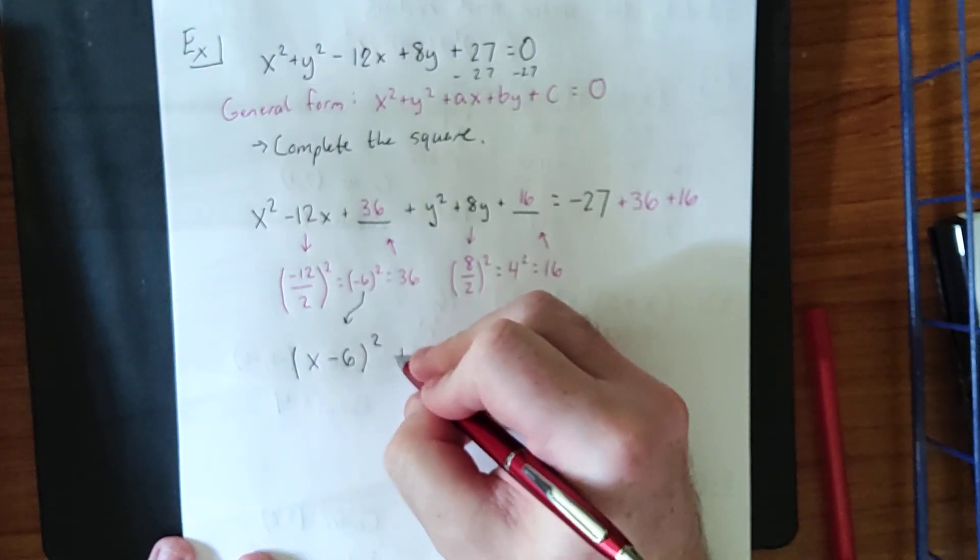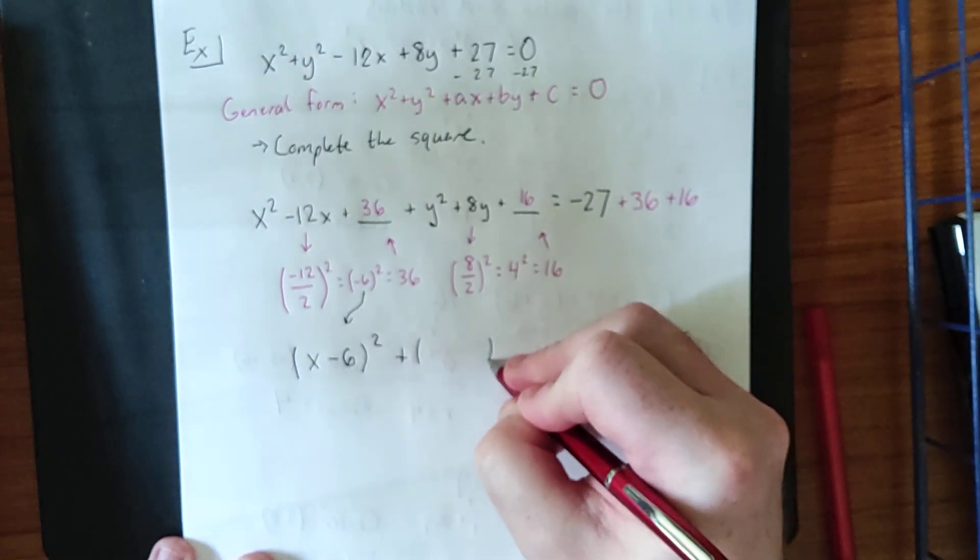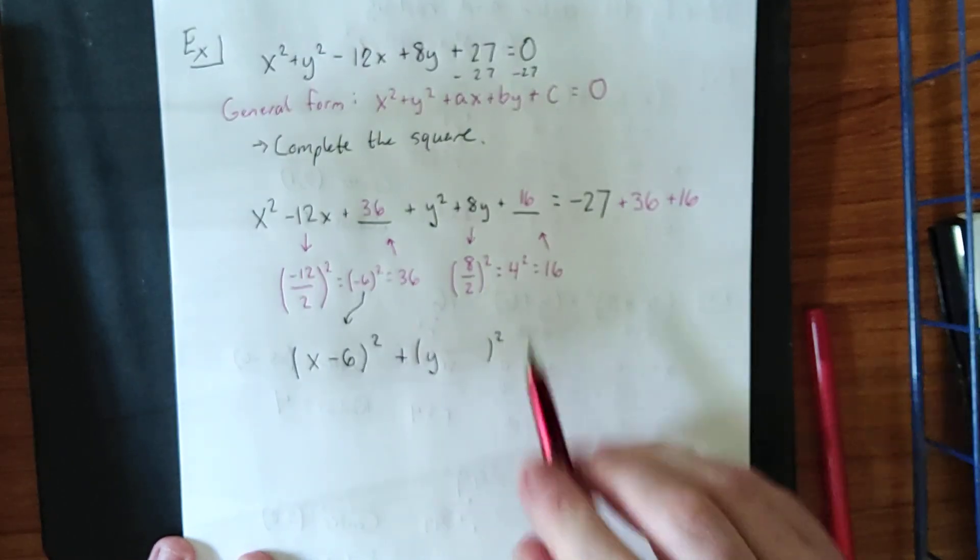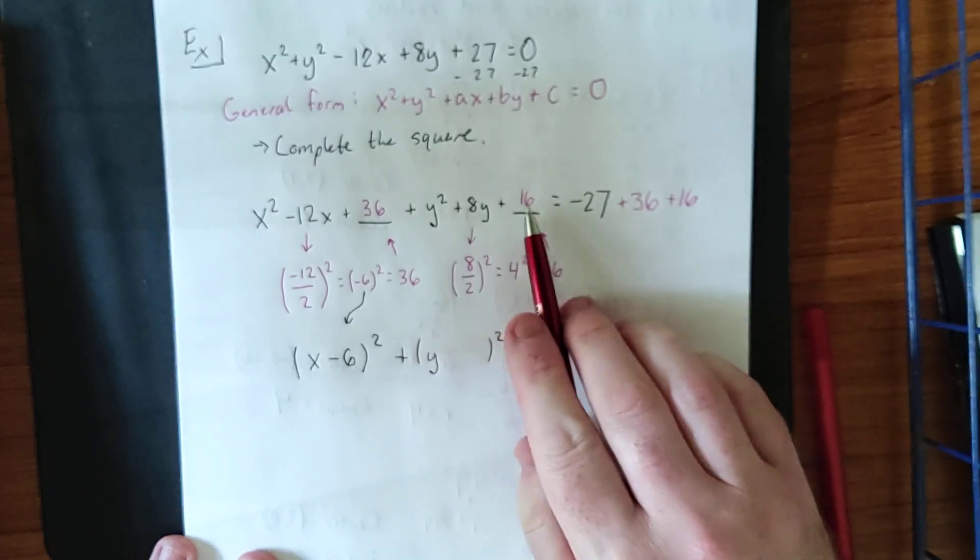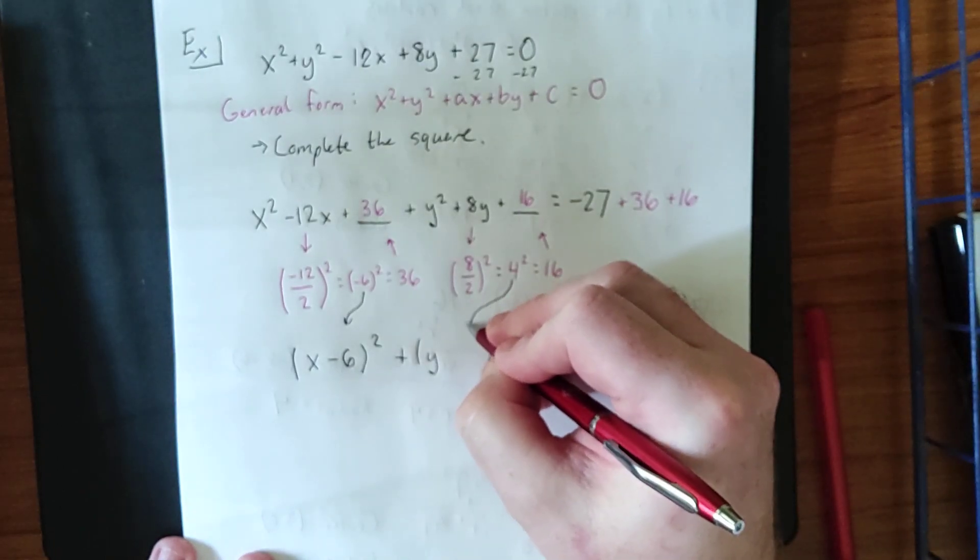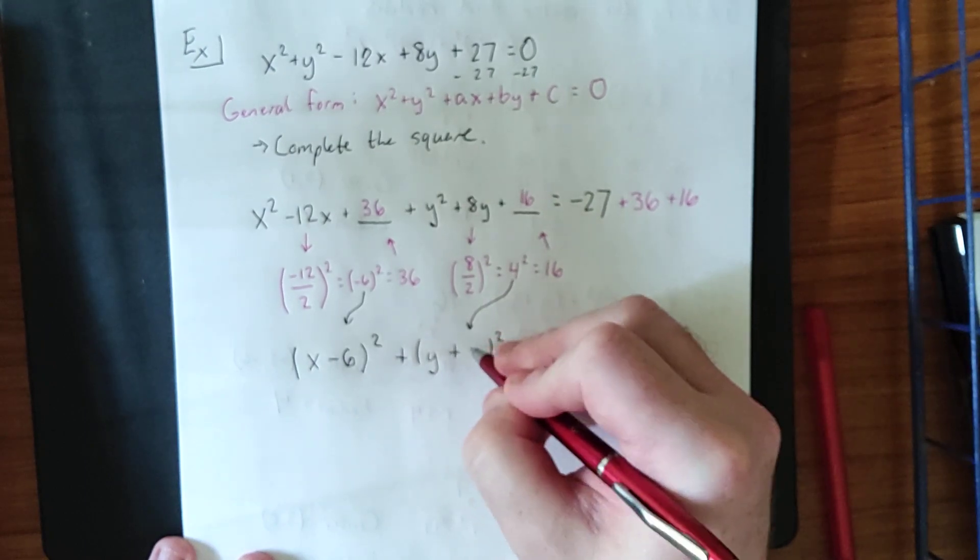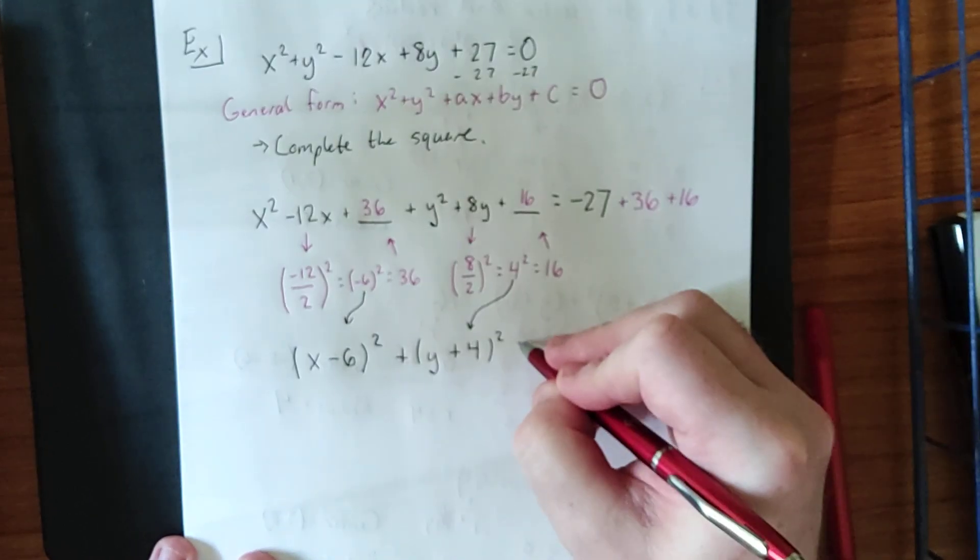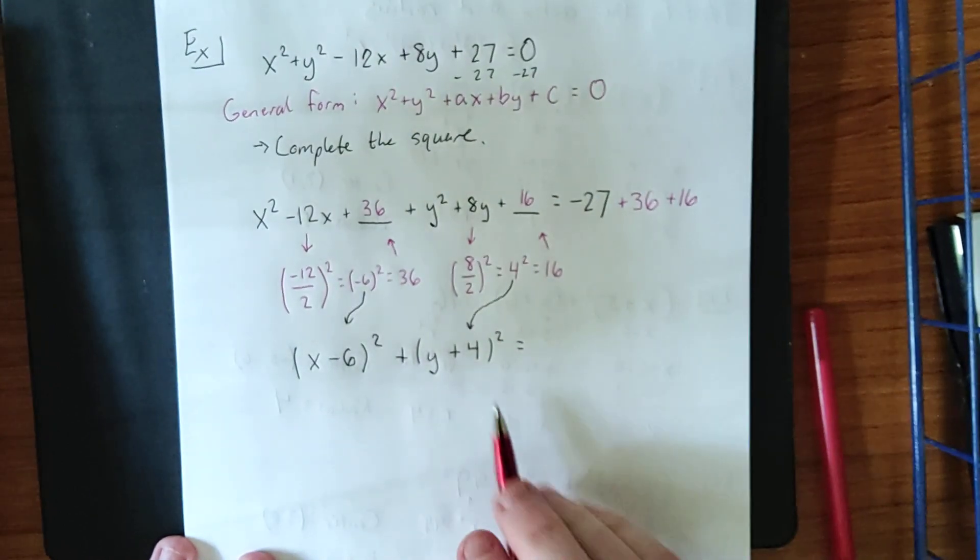You can expand that, or FOIL that, to verify that your result is correct. If we do the same thing with the y squared plus 8y plus 16, we grab the number after we have divided by 2, but before we've squared the result. That will give us y plus 4 quantity squared.